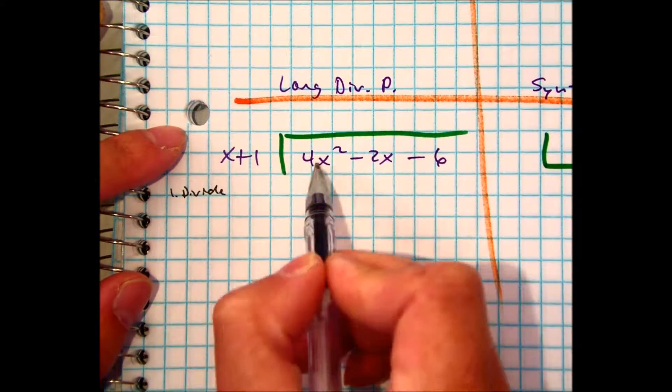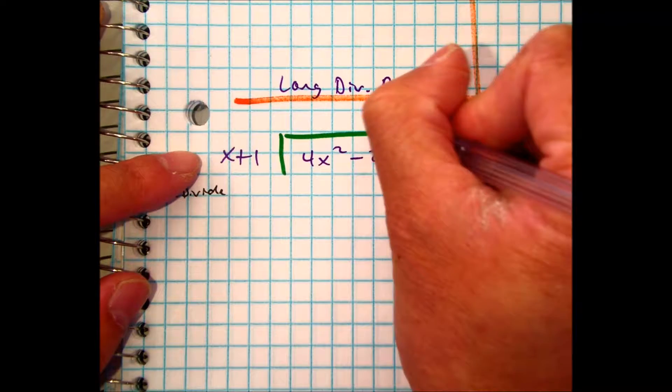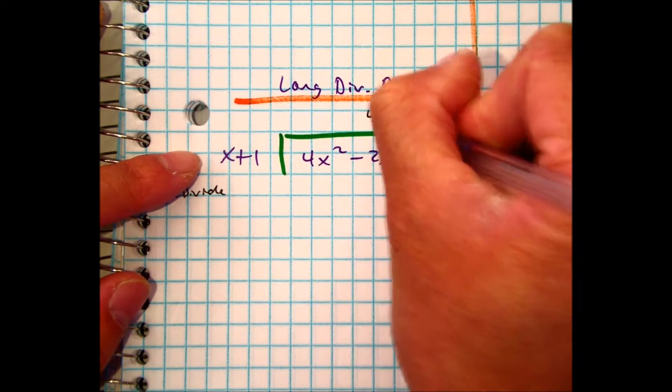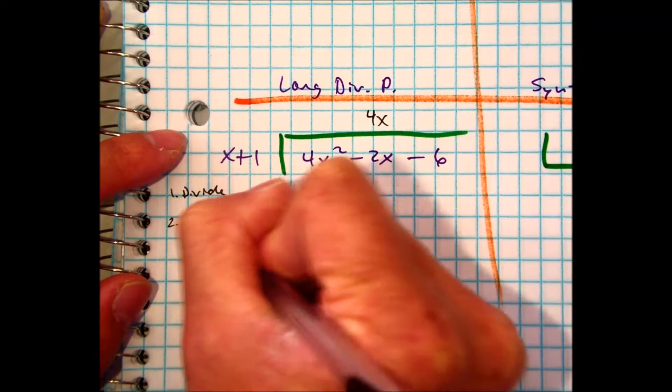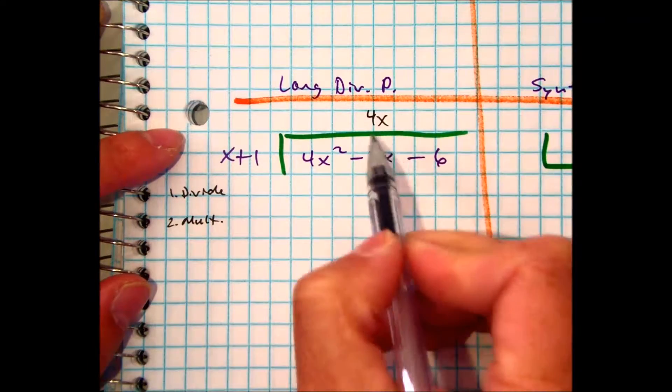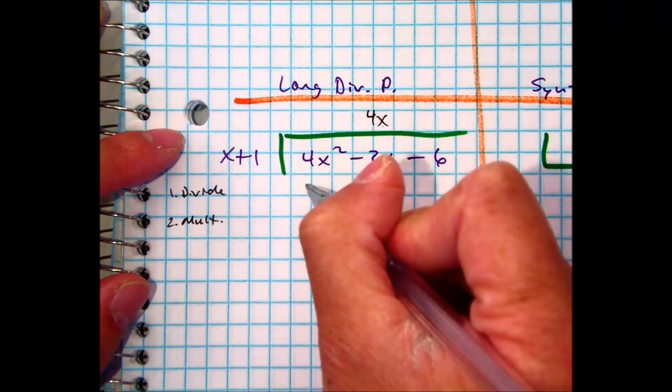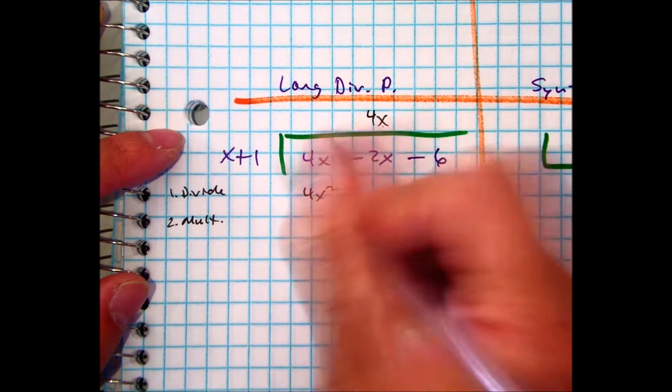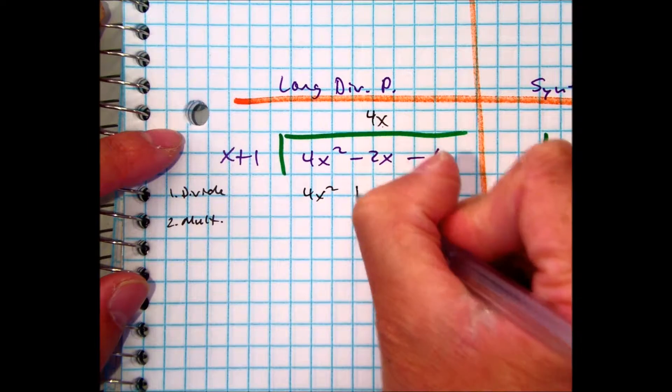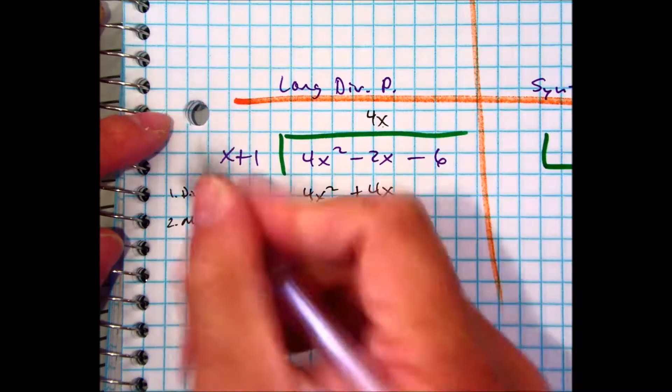So x goes into 4x² times, 4x, and then we're going to multiply. Go ahead and multiply with me. 4x times x is 4x², 4x times 1... What's the next thing I do?